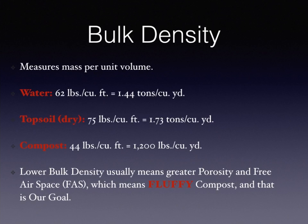Bulk density measures mass per unit volume. Water is 62 pounds per cubic foot or 1.44 tons per cubic yard. Dry topsoil is 75 pounds per cubic foot or 1.73 tons per cubic yard. Compost is 44 pounds per cubic foot or 1,200 pounds per cubic yard. Lower bulk density usually means greater porosity and free air space — which means fluffy compost — and that is our goal.